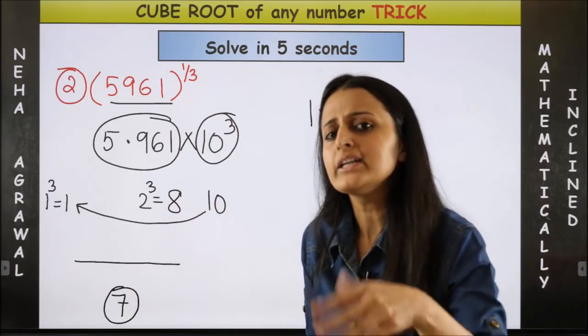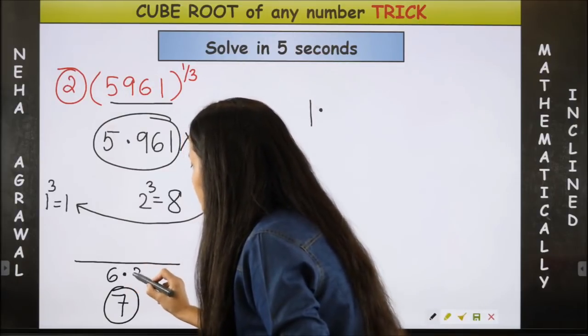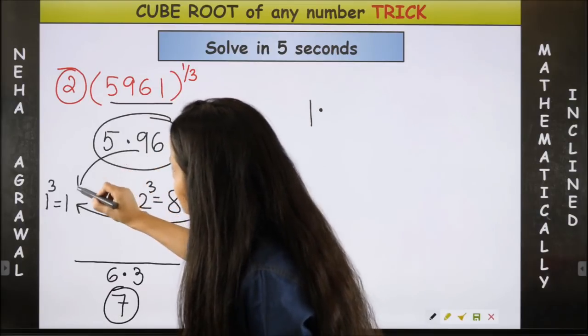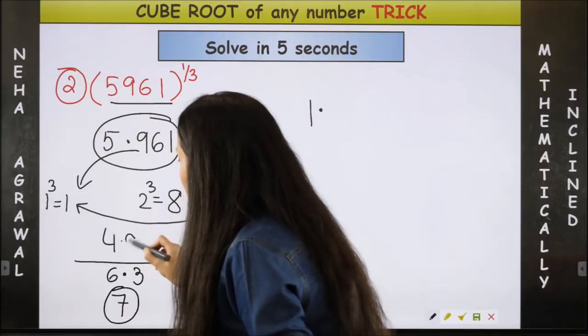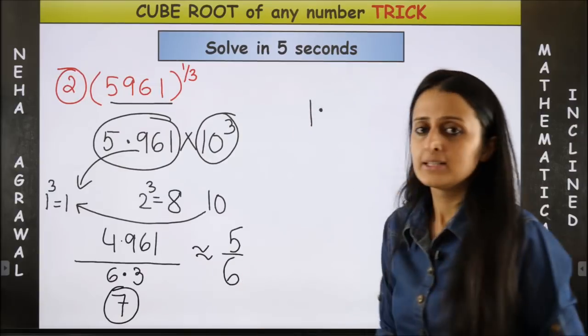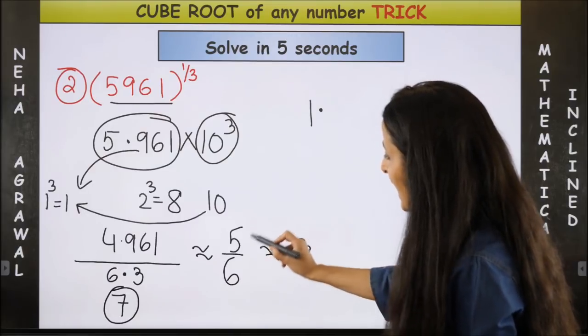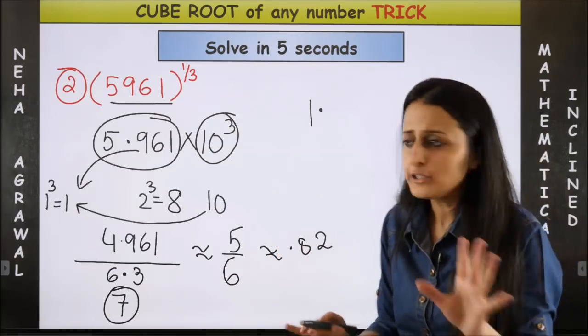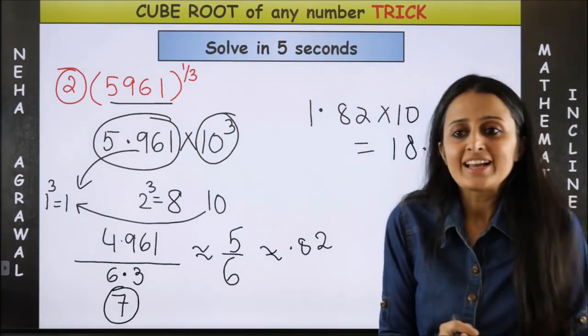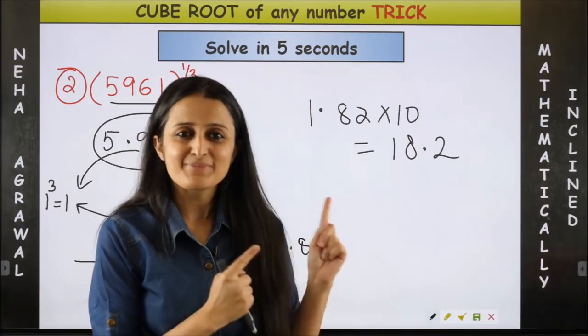But you are going to take 90 percent of this. 90 percent of 7 is 6.3, so I know I can roughly take it to be 6.3. Now it will be 5.961 minus 1, which gives us 4.961, so approximately I can take it to be 5 by 6. Now what does this give? I can say this is going to be 0.82, so roughly 1.82 into 10. And bingo, you can get your answer as 18.2.